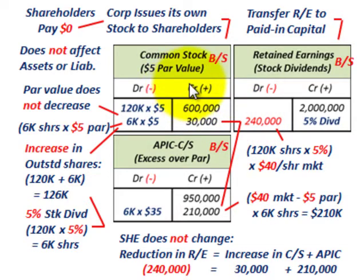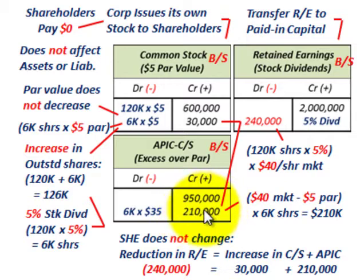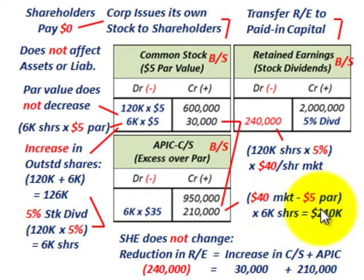Now let's look at how we transfer that $240,000 into common stock. First, the par amount: those 6,000 shares at $5 par increases common stock by $30,000. The par value per share stays at $5, but the par amount in common stock increases by $30,000. That accounts for $30,000 of the $240,000. The remaining $210,000 goes to additional paid-in capital for common stock — calculated as 6,000 shares times $35 ($40 market price minus $5 par).